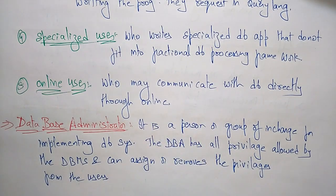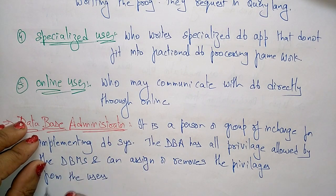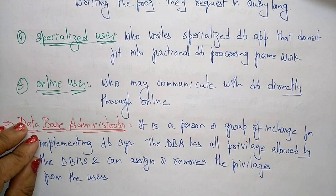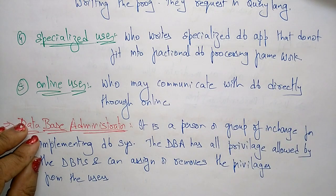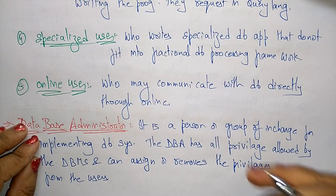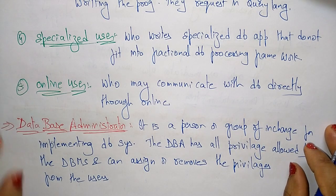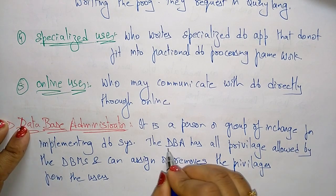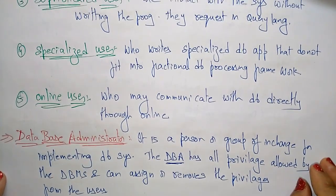He is the person or group in charge of implementing the database system and maintaining privileges — allowing persons to access the database management system and assigning or removing privileges from users. He can give or remove permissions to interact with the database system. That is what you call the database administrator, the DBA. Thank you.